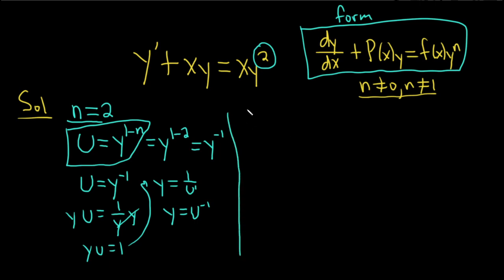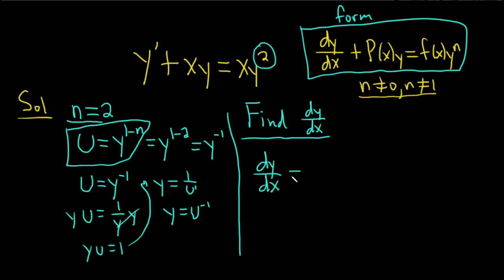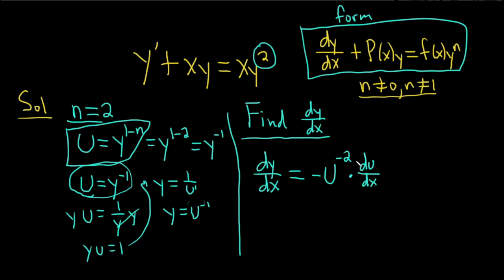The next step is to find dy/dx. We're taking the derivative of both sides. Since u equals y to the negative 1, and y is a function of x, u is also a function of x. So we're going to use the chain rule: bring down the negative 1, subtract 1 from the exponent, then multiply by the derivative of the inside function, du/dx. You're always going to get a du/dx here — every single time.